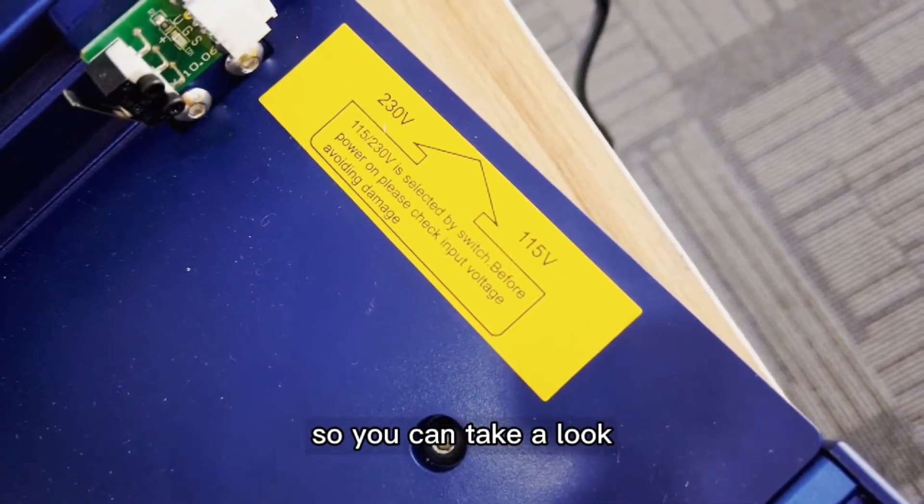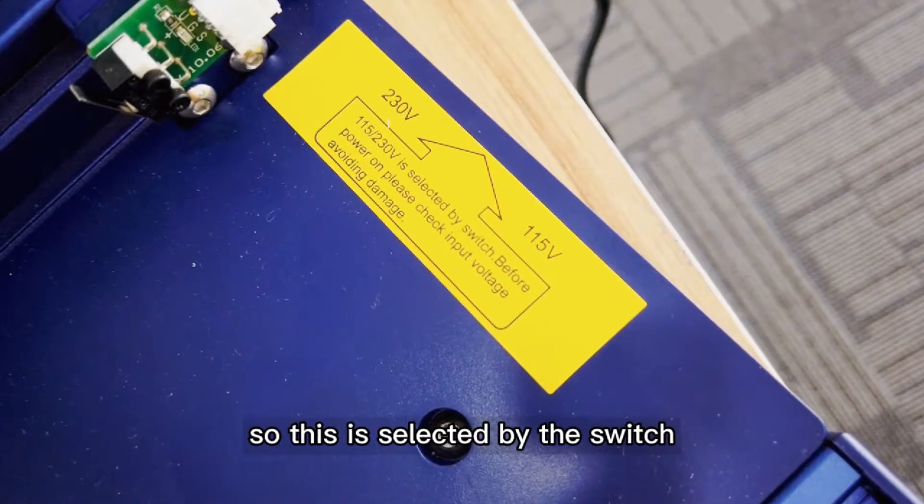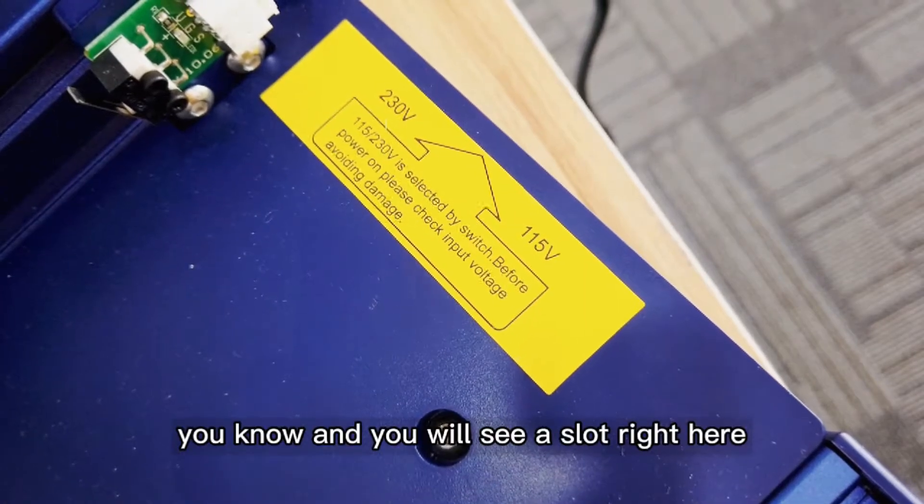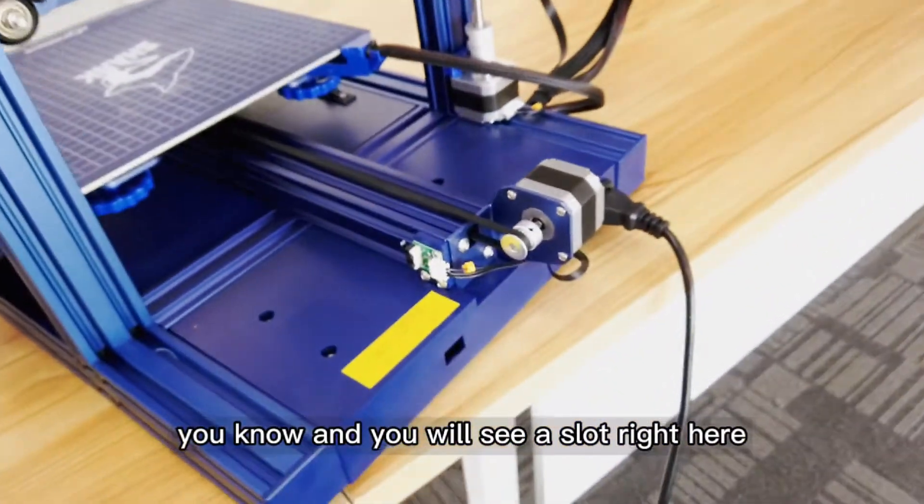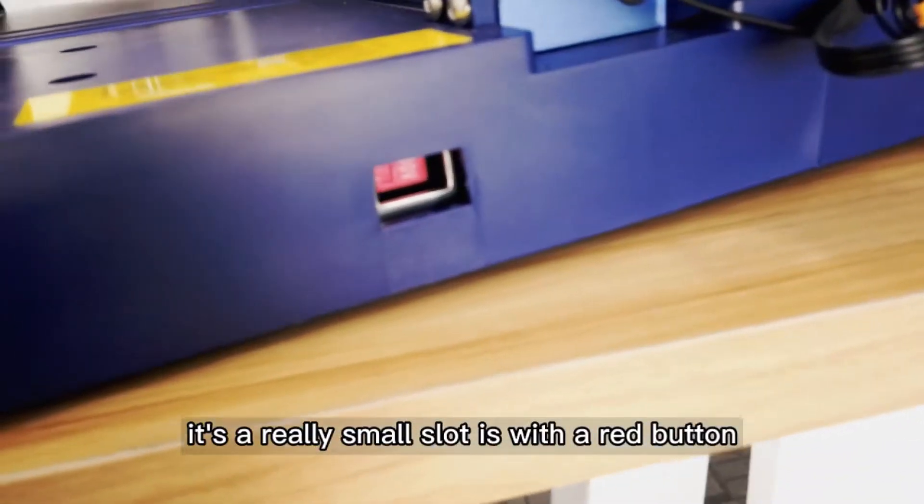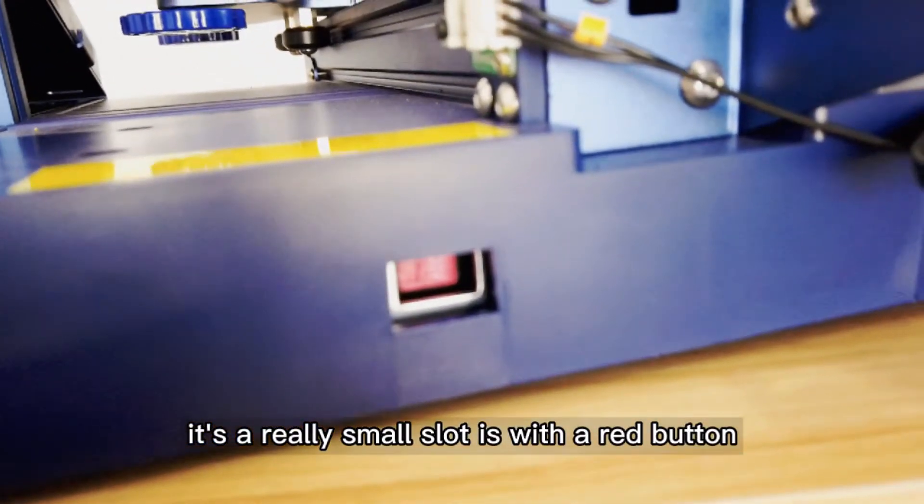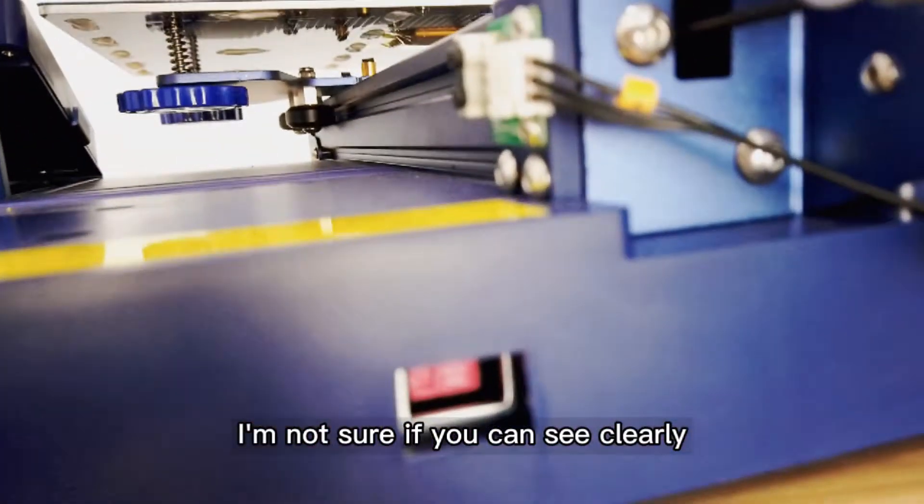This is selected by the switch. You will see a slot right here. It's a really small slot with a red button. I'm not sure if you can see clearly, but as you can see, it is 230 volts.